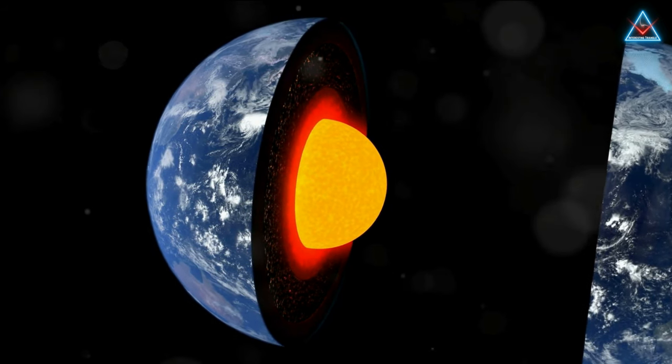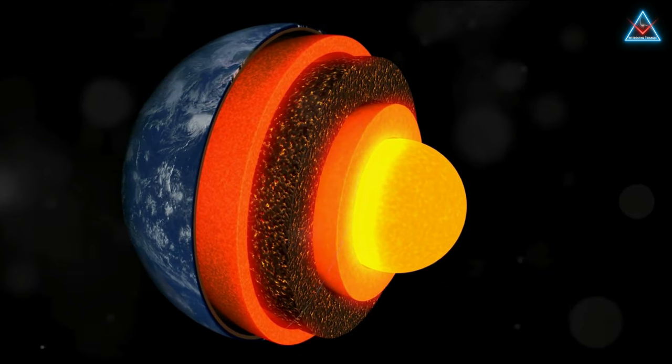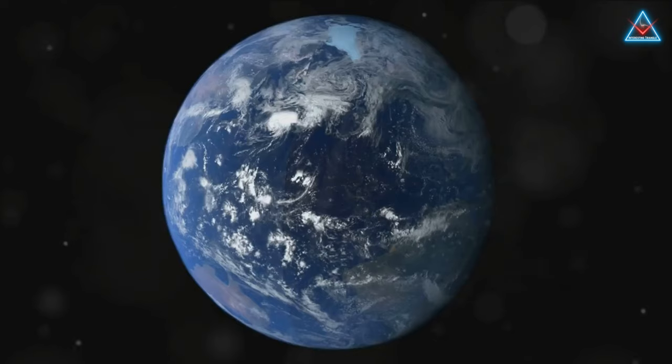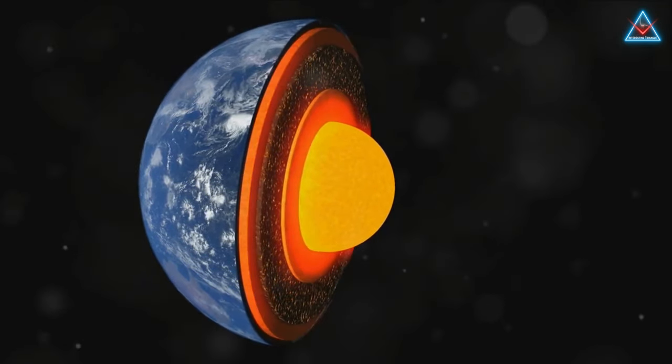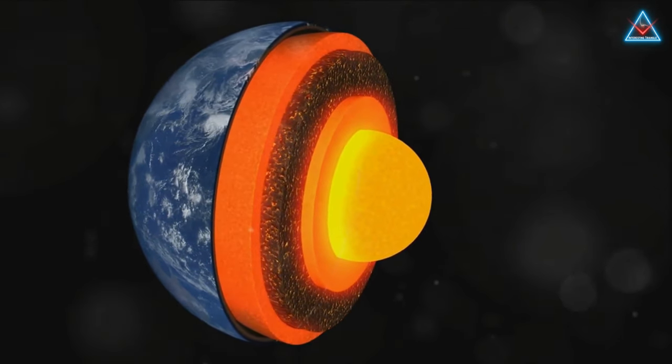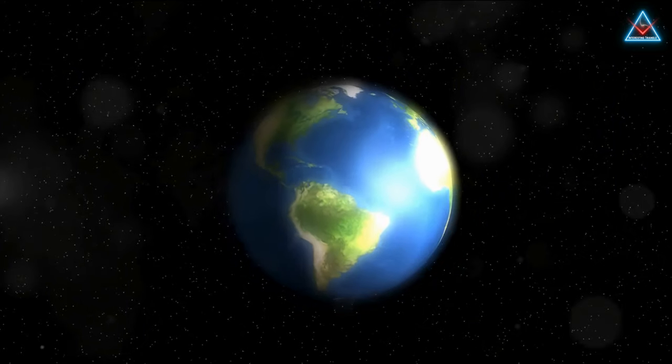But the dance doesn't stop there. At the heart of it all is the inner core. A solid sphere about three quarters the size of our moon, it too is made up of iron and nickel. But unlike its outer counterpart, the intense pressure here keeps it in a solid state, despite the scorching temperatures that exceed those on the surface of the Sun.